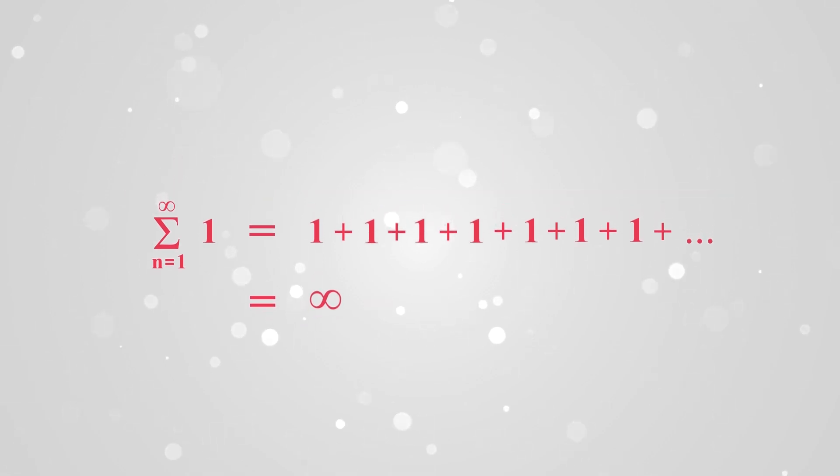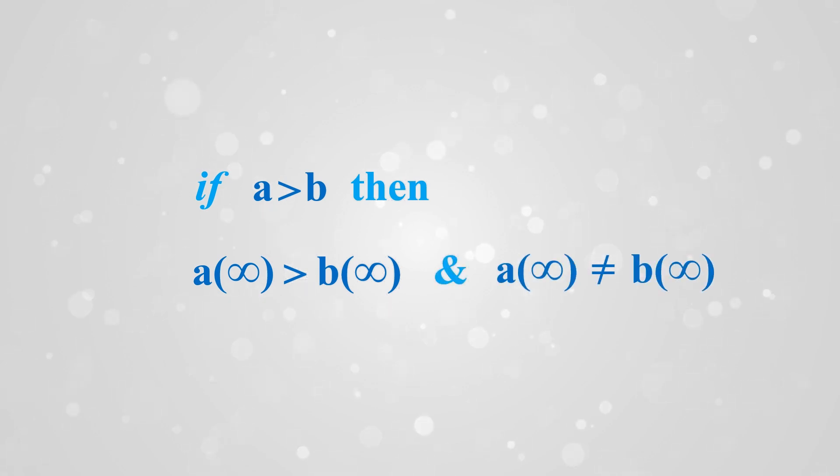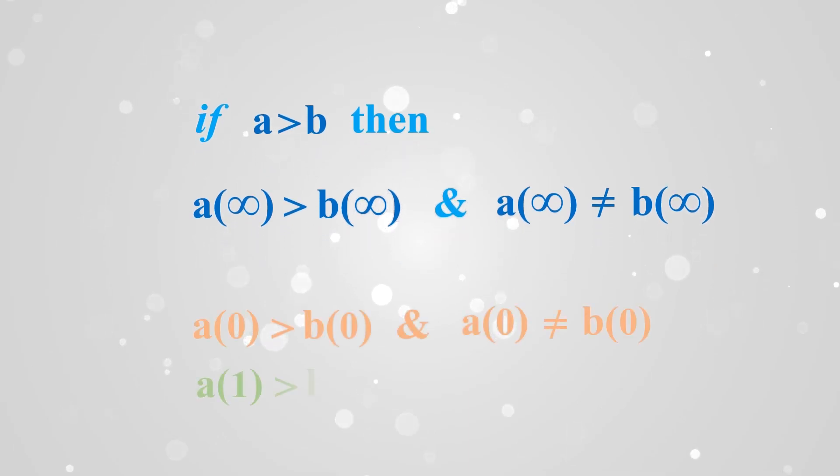But instead of unit 1 if we sum 2 uncountable times its sum is 2 times infinity and 2 times infinity is different than 1 times infinity. Similarly 3 times infinity is different than 2 infinity or infinity. And general logic is expressed as if a is greater than b then a infinity is greater than b infinity and a infinity is not equal to b infinity. And same logic applies for 0 and 1 2 if they are present instead of infinity and the interrelations between these numbers are same as mentioned earlier.